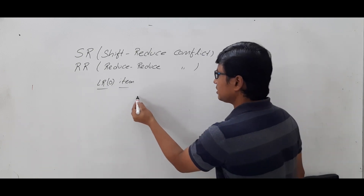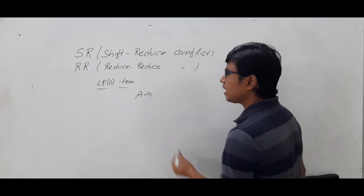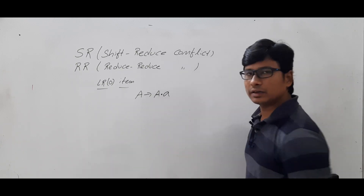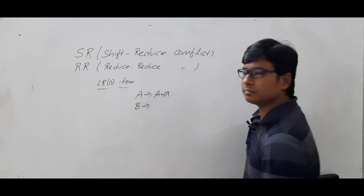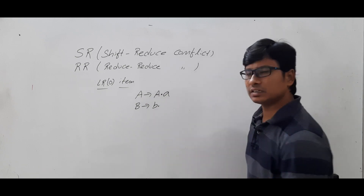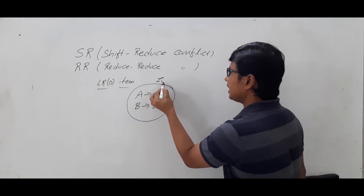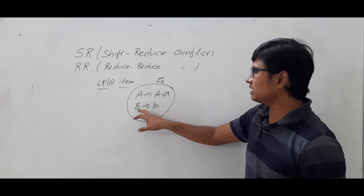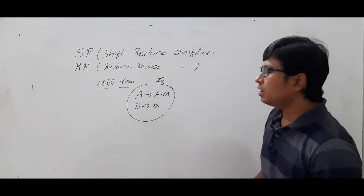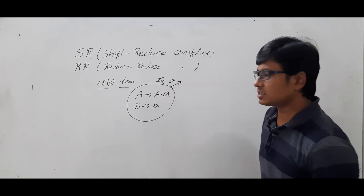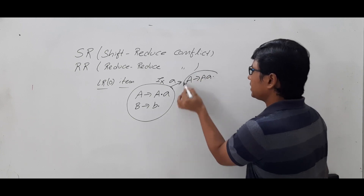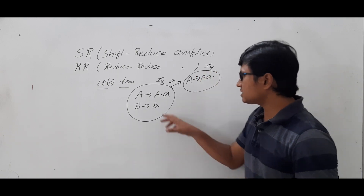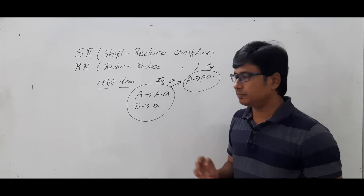Let me discuss SR conflict in LR0 items. Suppose I have a production A → α · a β (a shift item) and B → b · (a reduce item) in some item set Ix. The go-to on 'a' gives A → α a · β, making Iy. So this is a shift item and this is a reduced item in the same state Ix.